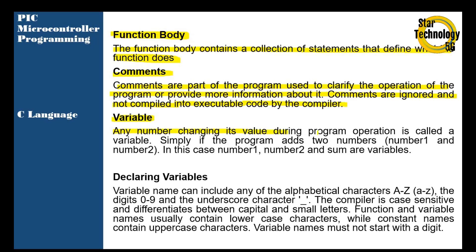Any number changing its value during program operation is called a variable. For example, if a program adds two numbers, number one and number two, then number one, number two, and the sum are variables. A variable name can include alphabets A to Z and a to z, digits 0 to 9, and underscore characters. The compiler is case sensitive. Variable names must not start with a digit.